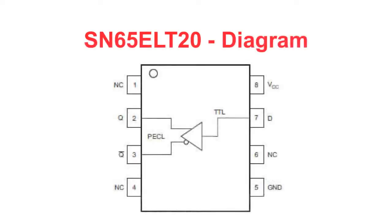One of our featured devices is the SN65ELT20. This is a TTL to differential PECL translator device that operates on a 5-volt supply. This device also has a flow-through pinout which enables easy layout and is available in an 8-pin TSSOP package. This is a classic building block for translation of signals.